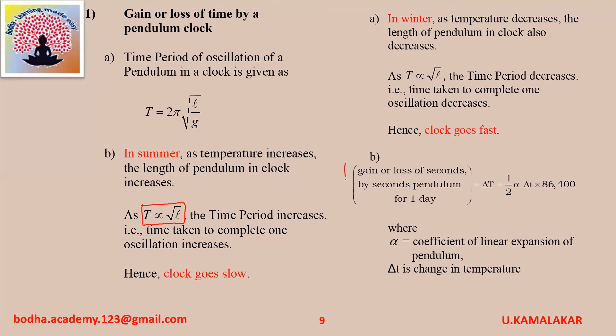Gain or loss of seconds by a seconds pendulum: the gain or loss of seconds per day is given as (1/2) alpha delta T into 86400, where alpha is the coefficient of linear expansion of the pendulum, delta T is the change in temperature, and 86400 represents the number of seconds in one day.